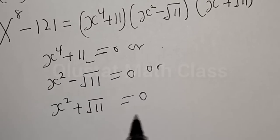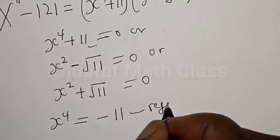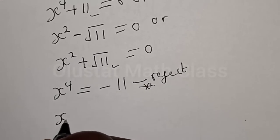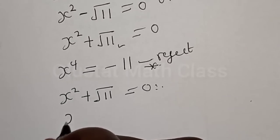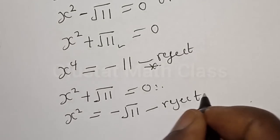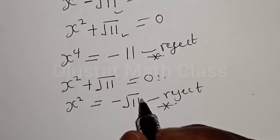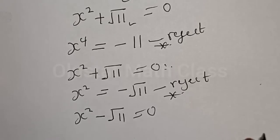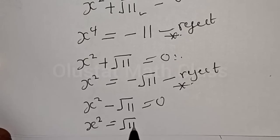From the factor s raised to power 4 plus 11 equal to 0, we get s to power 4 equal to minus 11 — we reject this because s cannot take a negative value. Also from s squared plus square root of 11 equal to 0, we get s squared equal to minus square root of 11 — we reject this as well because it is negative. Therefore the only valid root comes from s squared minus square root of 11 equal to 0.